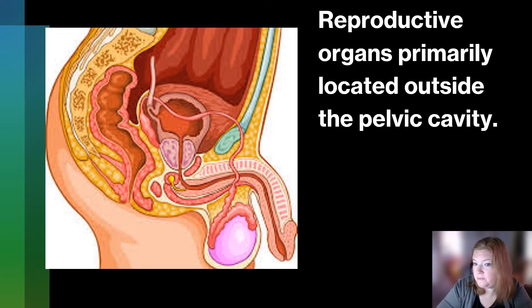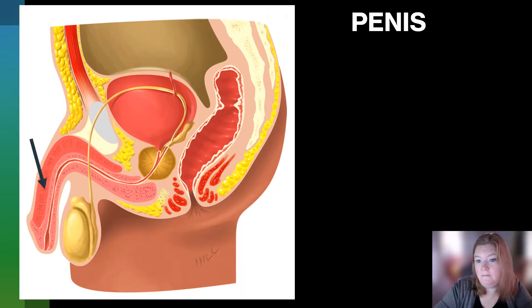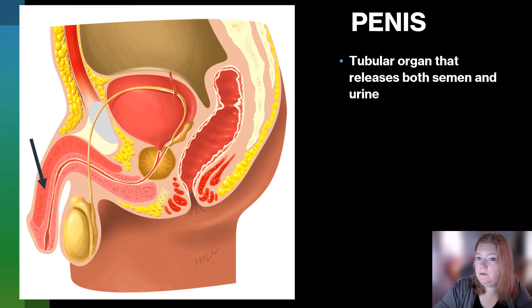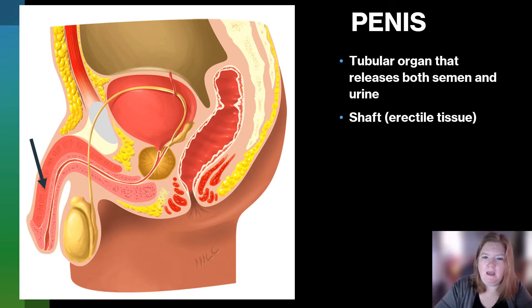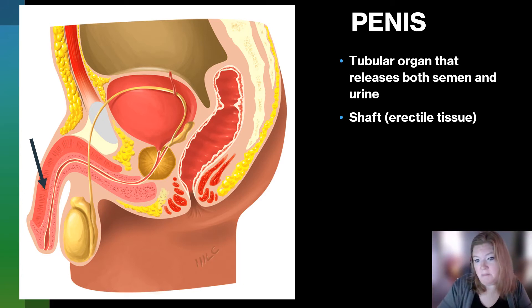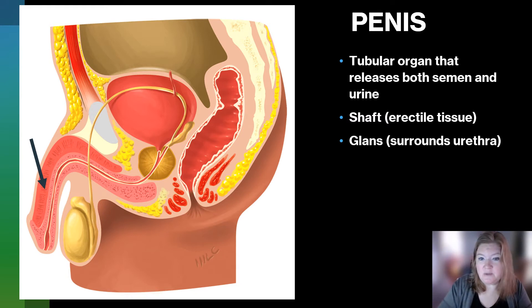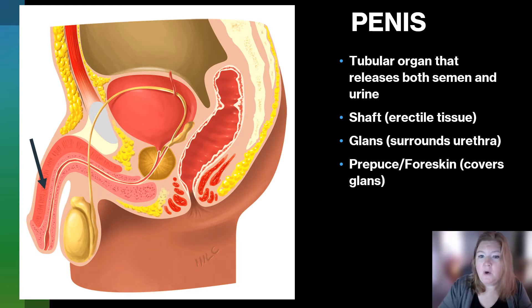The reproductive organs for people with testicles are primarily located outside the pelvic cavity. The penis is a tubular organ that releases both semen and urine. It has a few parts. We have the shaft, which is composed primarily of erectile tissue. We have the glans that surrounds the urethra. And we have the prepuce, or the foreskin, which covers the glans.